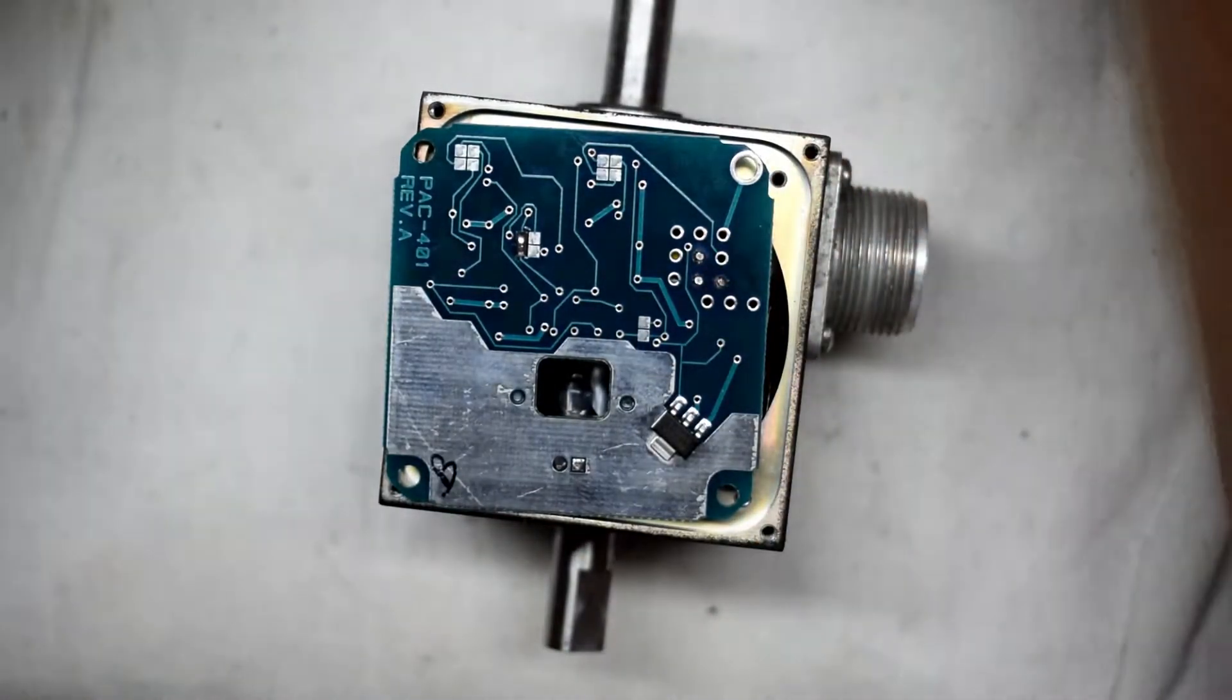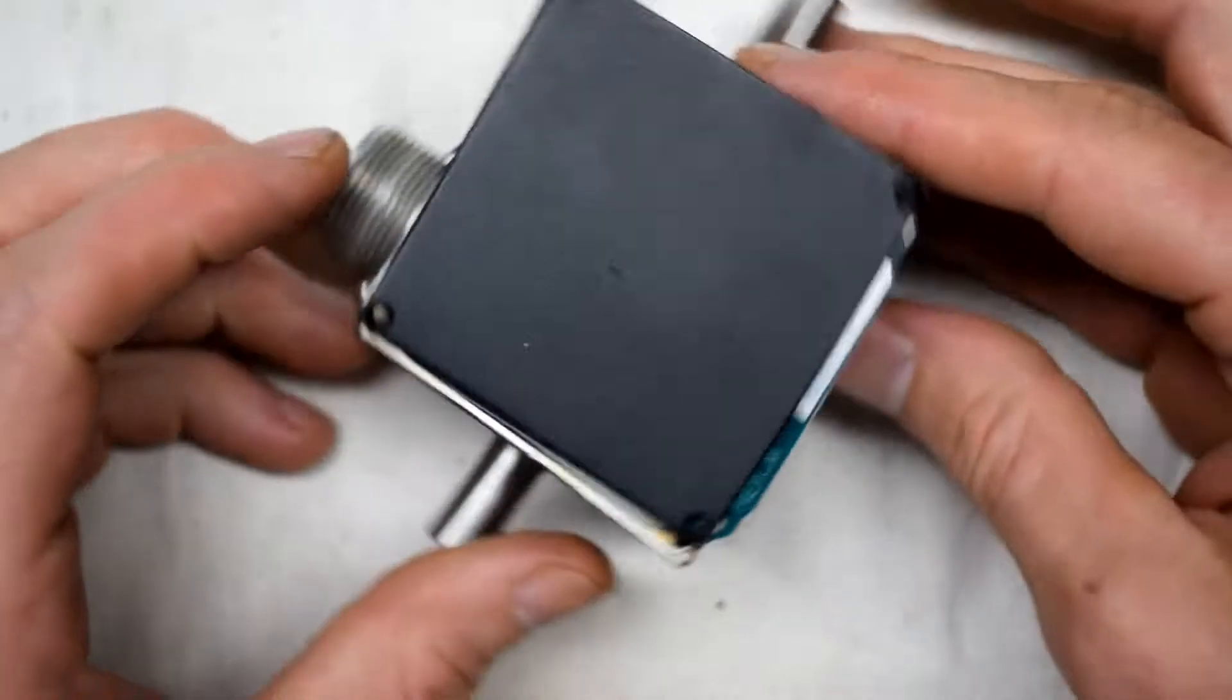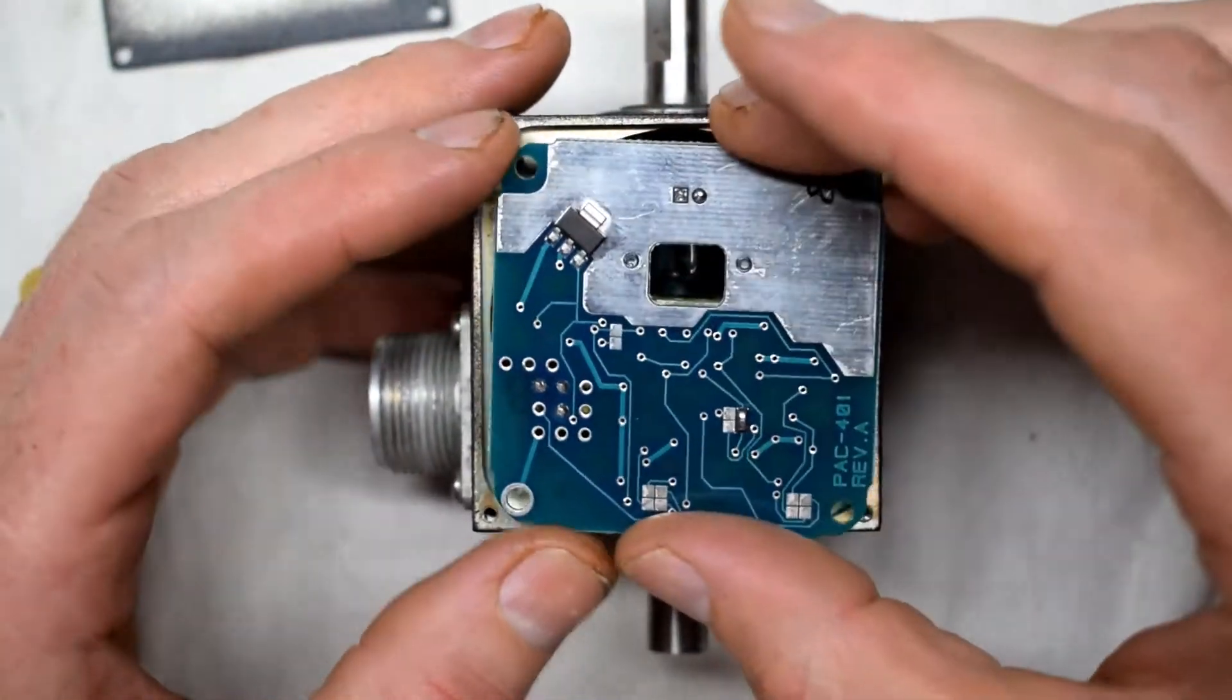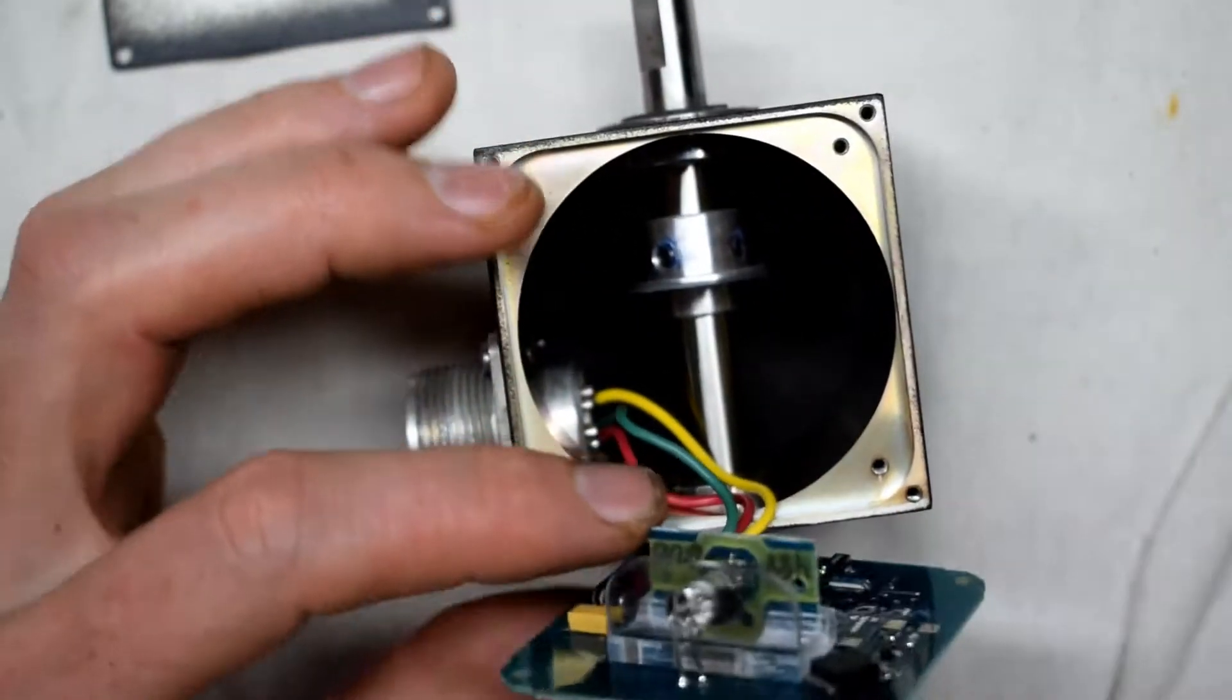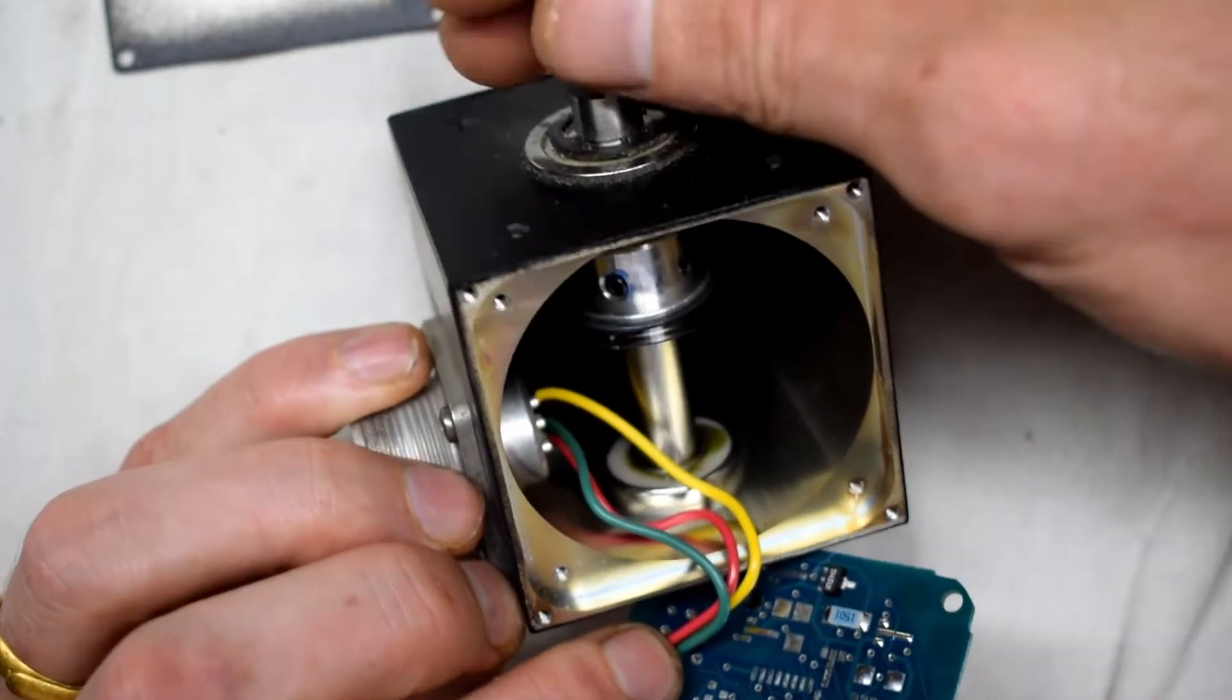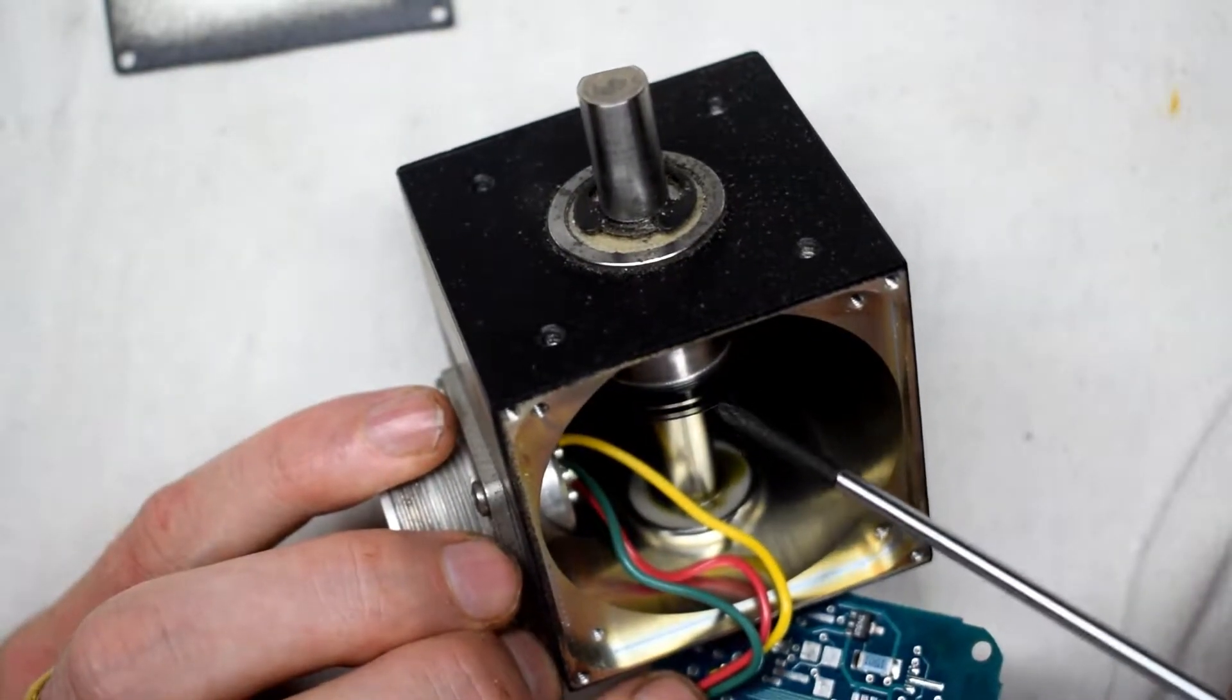And this will come out like this. Inside there is a shaft that spins and it has this little plastic film with some black lines on it.